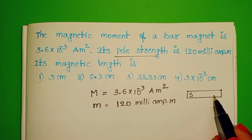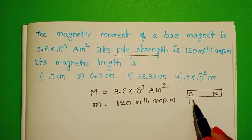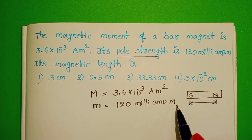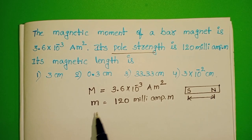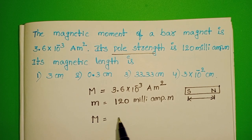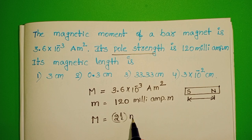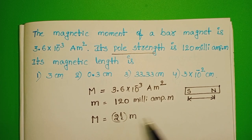South pole, north pole. The length in between south pole and north pole is called magnetic length. Magnetic moment equals magnetic length into pole strength. This is the formula of magnetic moment.